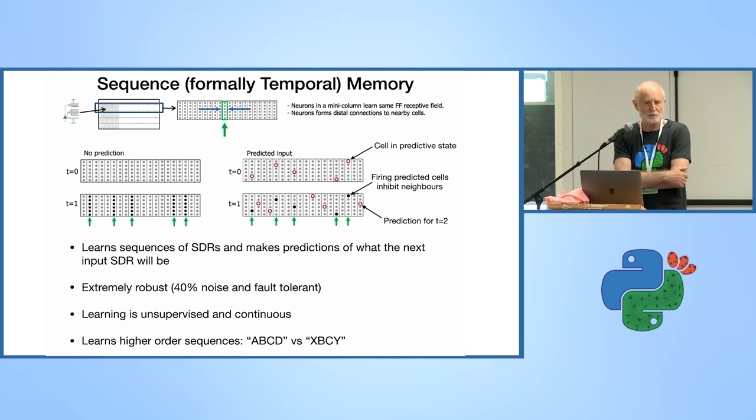They're extremely robust. If 40% of the neurons in this layer were destroyed, it would still operate. Learning is unsupervised and continuous. And it can easily learn higher sequences like ABCD or XCBCY.